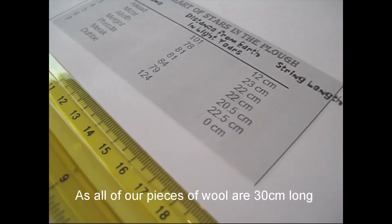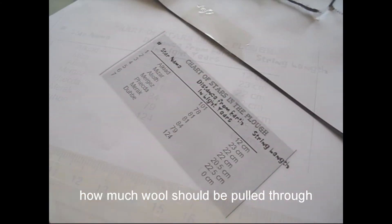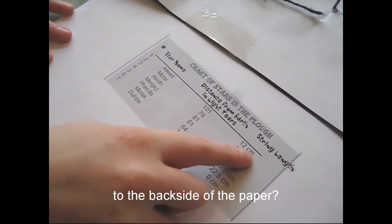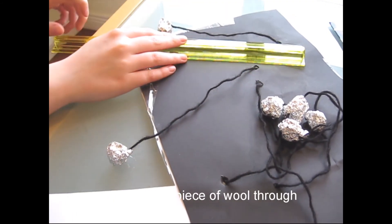As all of our pieces of wool are 30cm long, do you think we can use the chart to calculate how much wool should be pulled through to the back side of the paper? Make your calculations and pull each piece of wool through to the correct length.